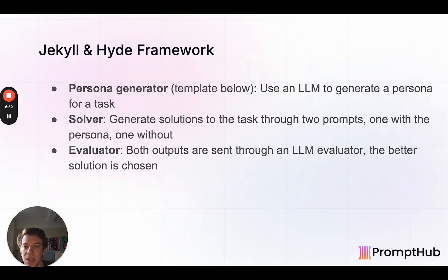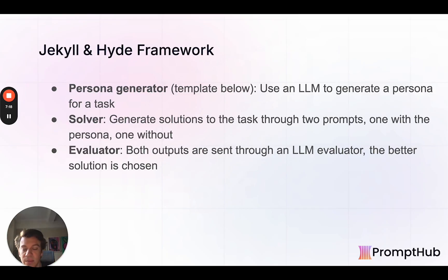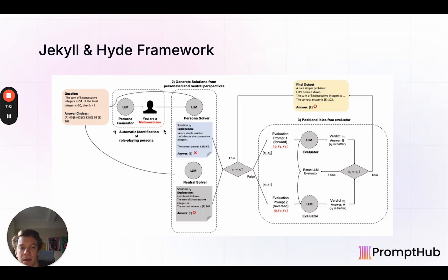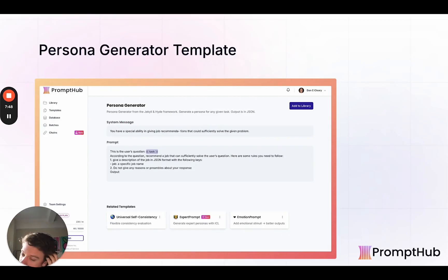Another paper takes both sides. They introduced something called the Jekyll and Hyde framework — a framework with multiple LLM calls and an evaluator. The first step is to automatically generate a persona based on the task. If it's a math task, generate a persona through a prompt. Then the problem gets solved twice: once with the persona and once without. So if it's 'what's two plus two,' they run it once normally and once with 'you're a mathematician, what's two plus two.' Both outputs go to an evaluator and the better solution is chosen. They included the template, which has been added to PromptHub so you can try it out.